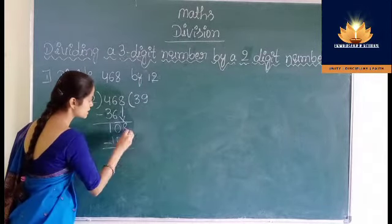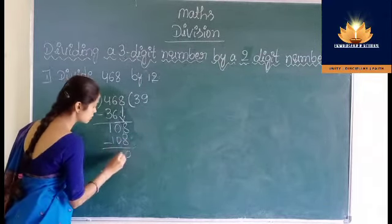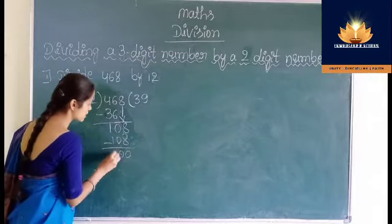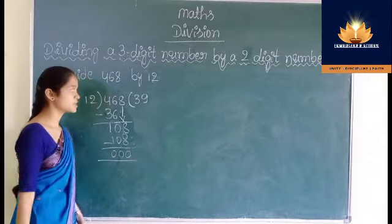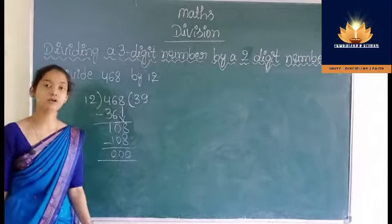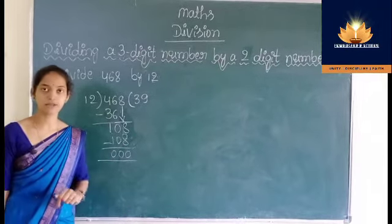Subtract: 8 minus 8 is 0, 0 minus 0 is 0, 1 minus 1 is 0. So we get 39 as the quotient.